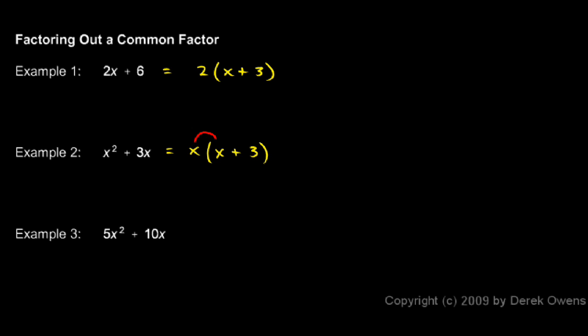And you can see that multiplying here would give me x times x, which is x squared, plus x times 3, which is 3x. So these are the two factors.